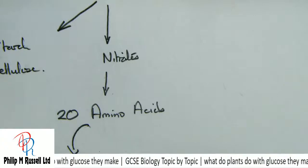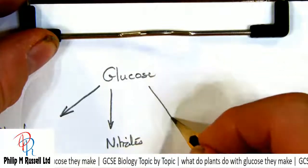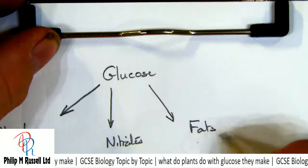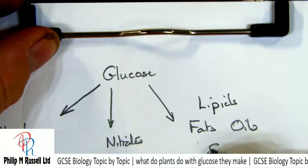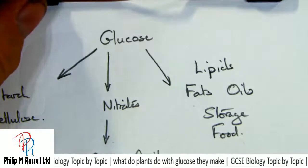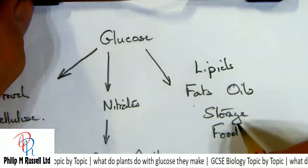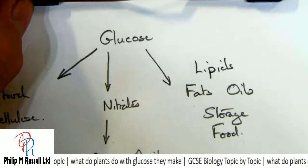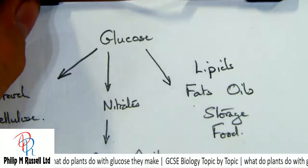Glucose can also be used to make fats and oils — what we call lipids. These are used largely for longer-term storage of food as an energy store. Some plants are very rich in lipids, which makes them good for food or perhaps for fuels.